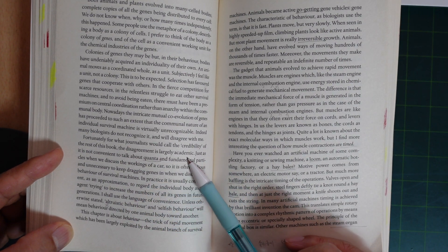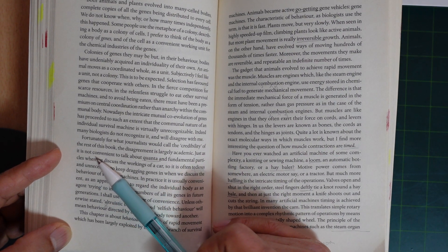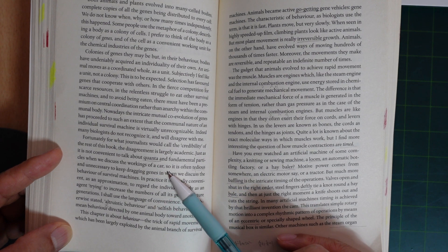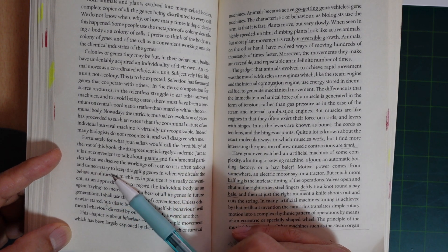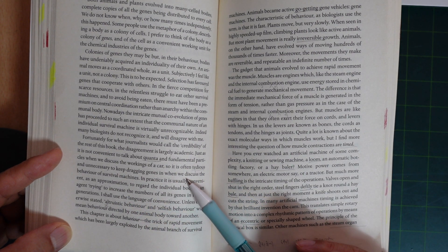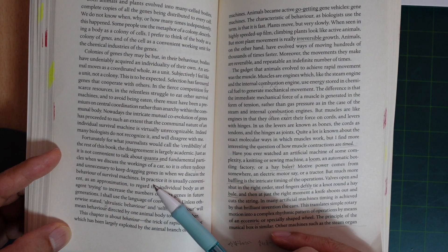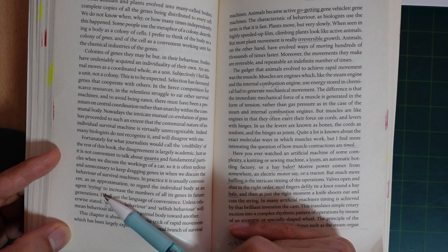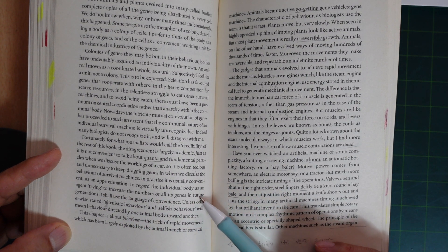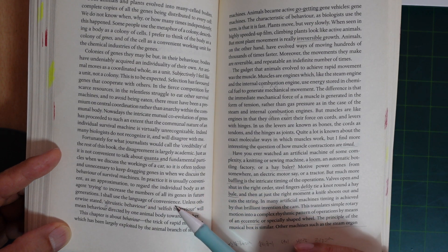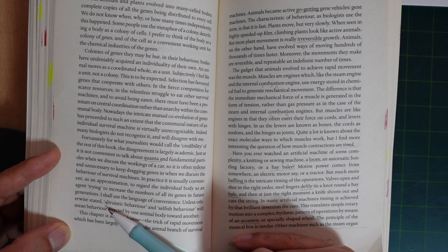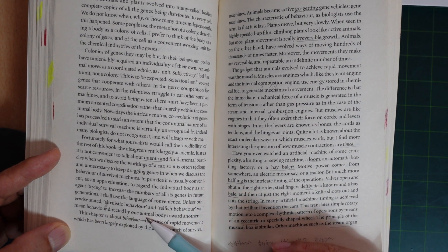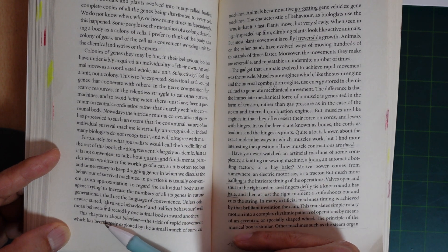Just as it is not convenient to talk about quanta and fundamental particles when we discuss the working of a car, so it is often tedious and unnecessary to keep dragging in genes when we discuss the behavior of survival machines. In practice, it is usually convenient as an approximation to regard the individual body as an agent trying to increase the number of all its genes in future generations. I shall use the language of convenience. This chapter is about behavior.